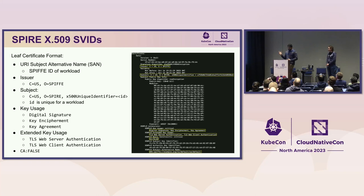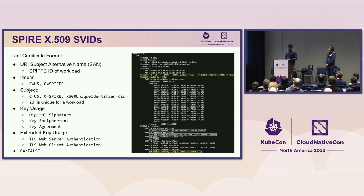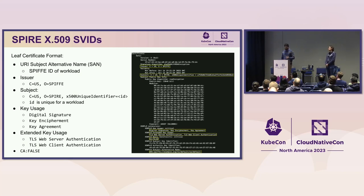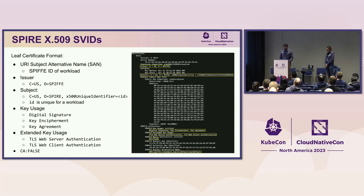As we talked earlier, it contains the SPIFFE ID of the workload in the URI SAN field. The issuer has country US and organization as SPIFFE. The subject has country US, organization SPIRE, and a unique identifier string which is unique for a workload. It also has digital signature, key encipherment, and key agreement specified in the key usage field, and TLS web server and web client authentication specified in the extended key usage field. And lastly, it has the CA flag set to false, which indicates that it is a leaf certificate and not a certificate authority.